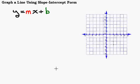In this video we're going to look at graphing a line using the slope-intercept form of a line. So first let's look at what slope-intercept form of a line is. The formula for slope-intercept form is right here, y equals mx plus b.